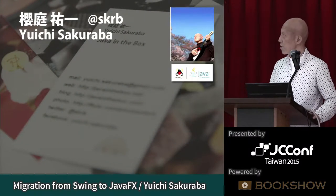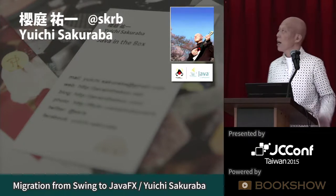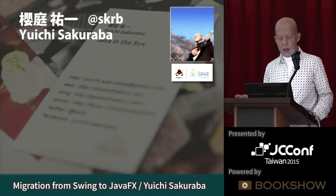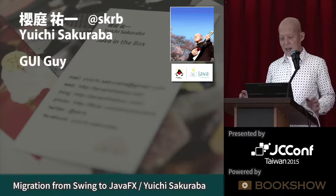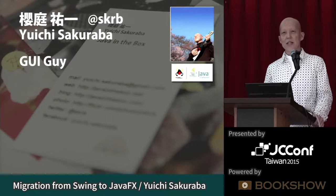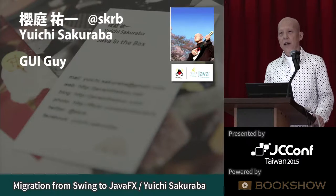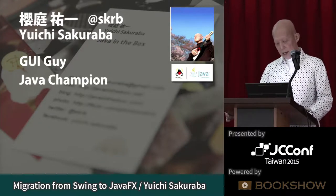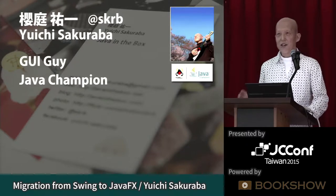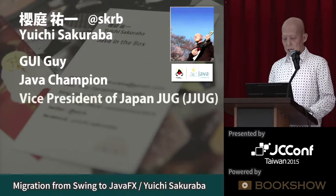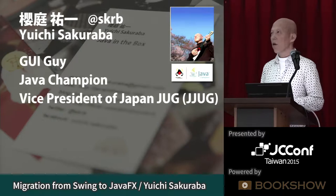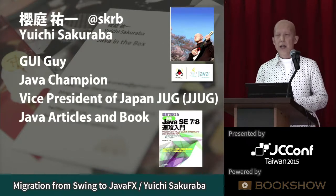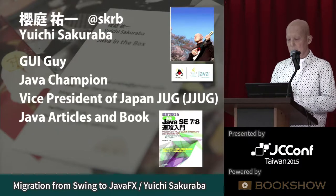This is my self-introduction. My name is Yuki Sakuraba from Japan. My Twitter account is @makSKR — if you have questions about this presentation, please tweet me. I'm a GUI guy. I've used Java for 20 years, especially GUI: AWT, Swing, and JavaFX. I'm also one of the Java Champions, and the only Java Champion in Japan. I'm a vice president of the Japan Java User Group — we call it J-JUG — and I write many Java articles for papers, web magazines, and books.